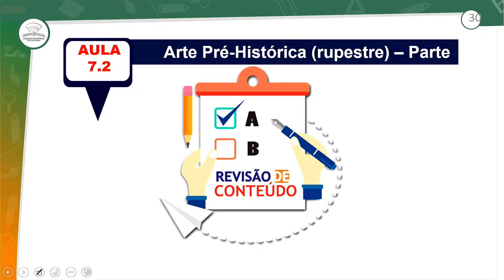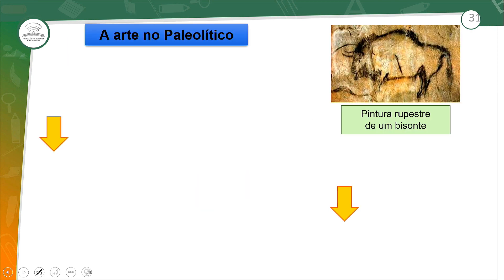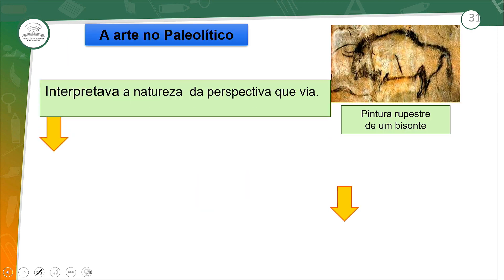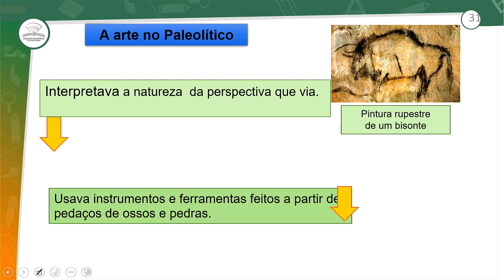O nosso tema foi Arte Pré-Histórica, o PES, parte 1, aula 7.2. Nós falamos da arte em três períodos: Paleolítico, Neolítico e Idade dos Metais.